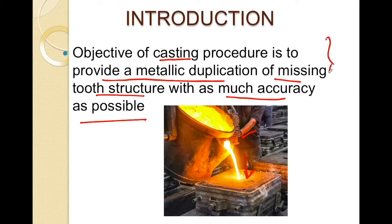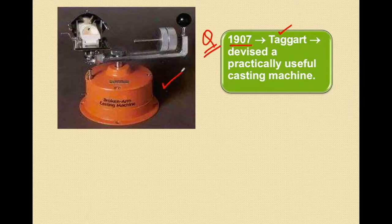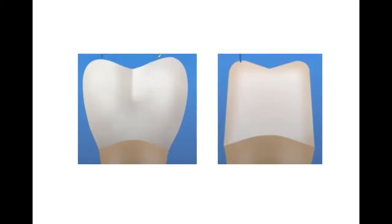Now let's see what the casting procedure is, how it is done, and what are the defects associated with the casting procedure. The casting procedure in dentistry was developed by Tageret in 1907 — very commonly asked in exams, so just remember it. This is the centrifugal machine which is used for the casting of dental casting alloys. Before going further, let's try to understand this procedure by images.